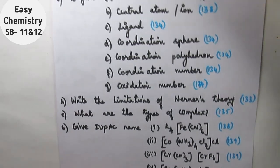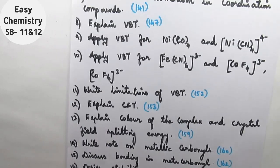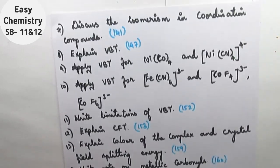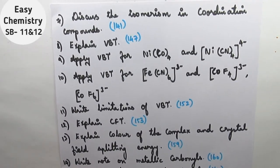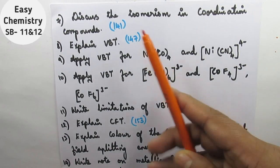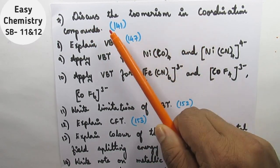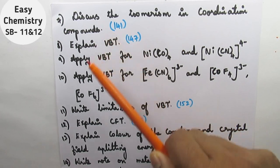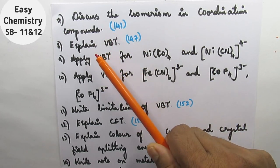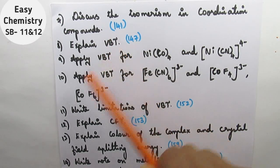Next, question number seven: discuss isomerism in coordination compounds. Question number eight: explain valence bond theory. VBT is simpler.